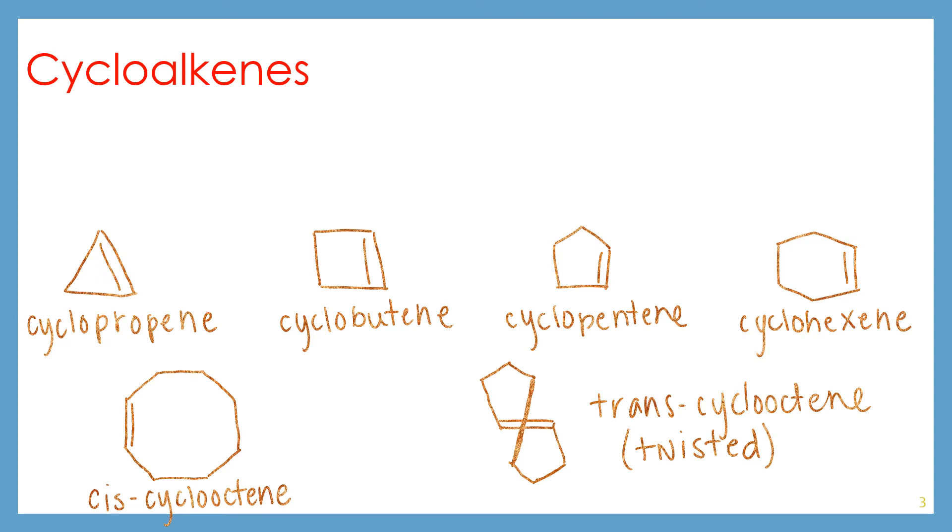As you get into your larger cycloalkenes, you can start to see trans cycloalkenes. But for most of these, you're actually going to see even greater ring strain. So there is quite a lot of ring strain in a cis cyclooctene. And the larger it gets, the greater the strain is as you are spreading these bonds out more and more. Some of the much larger molecules might actually prefer to have a couple trans alkenes thrown in there.